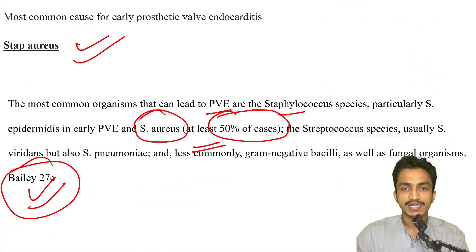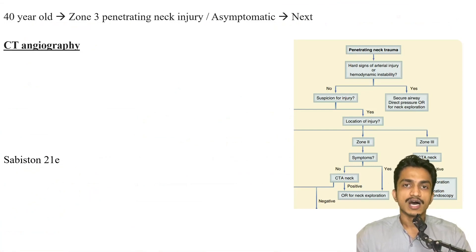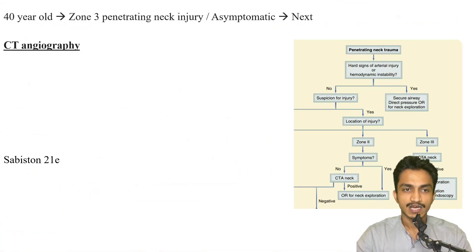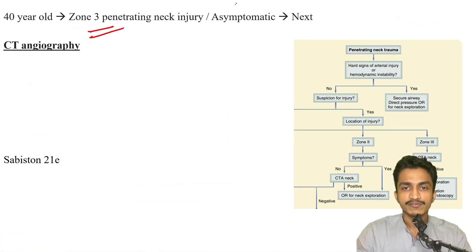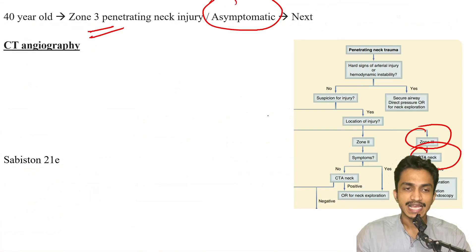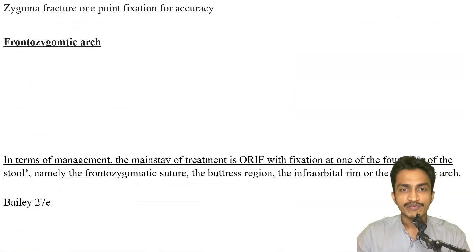In the neck there are three zones: Zone 1 is from the sternal notch up to the level of the cricoid, Zone 2 from the cricoid up to the angle of mandible, and Zone 3 from the angle of mandible up to the base of the skull. For a patient with a Zone 3 injury who is asymptomatic, from the algorithm already discussed, we go for CT angiography — that should be the answer. I hope nobody made mistakes in this.